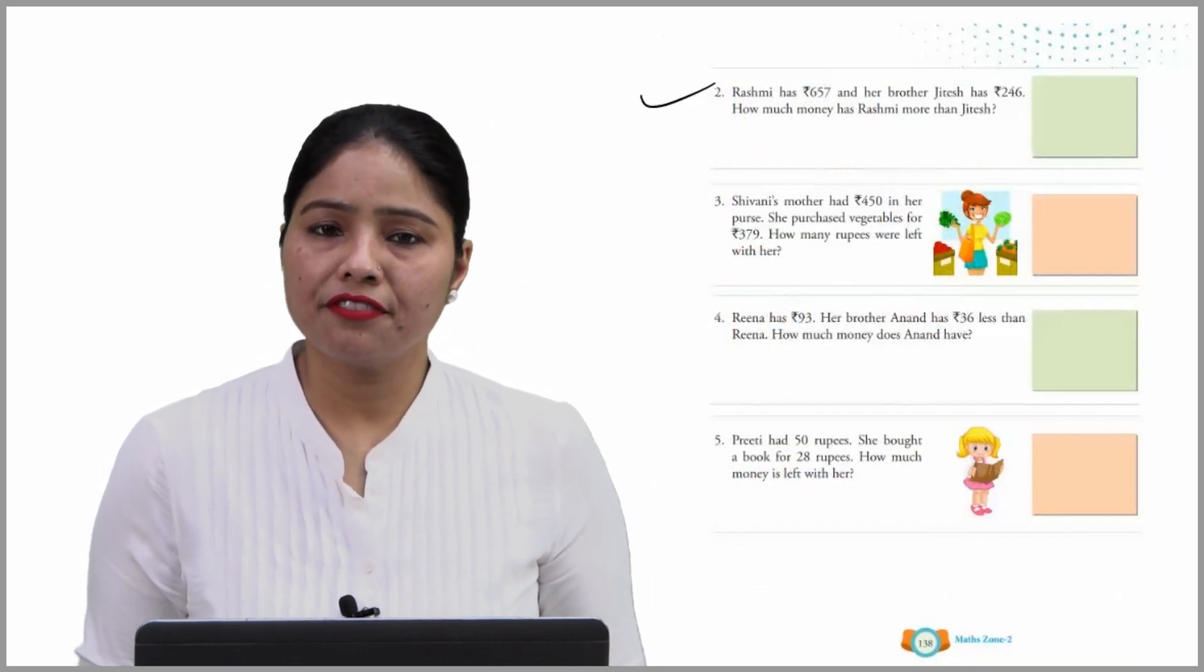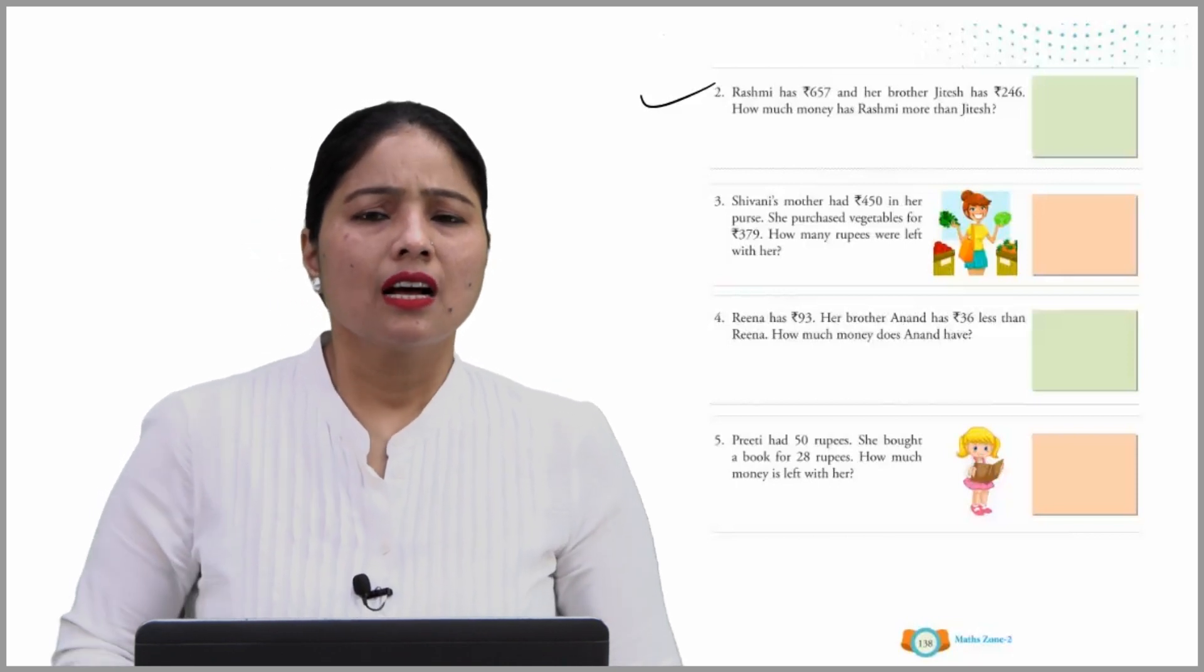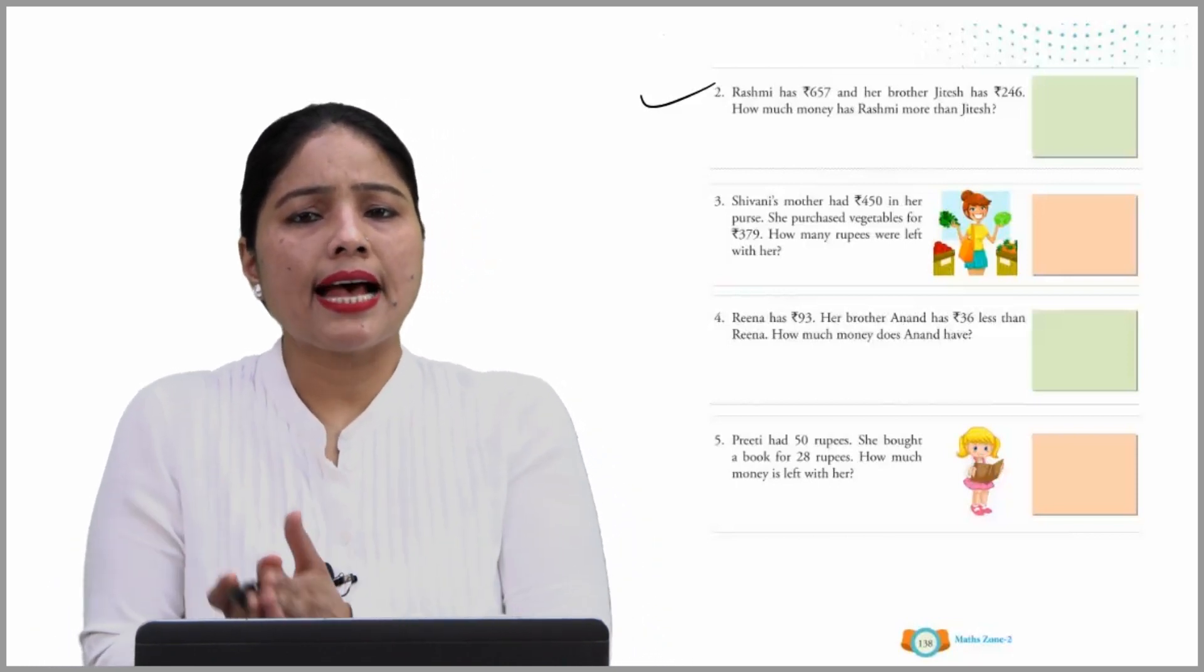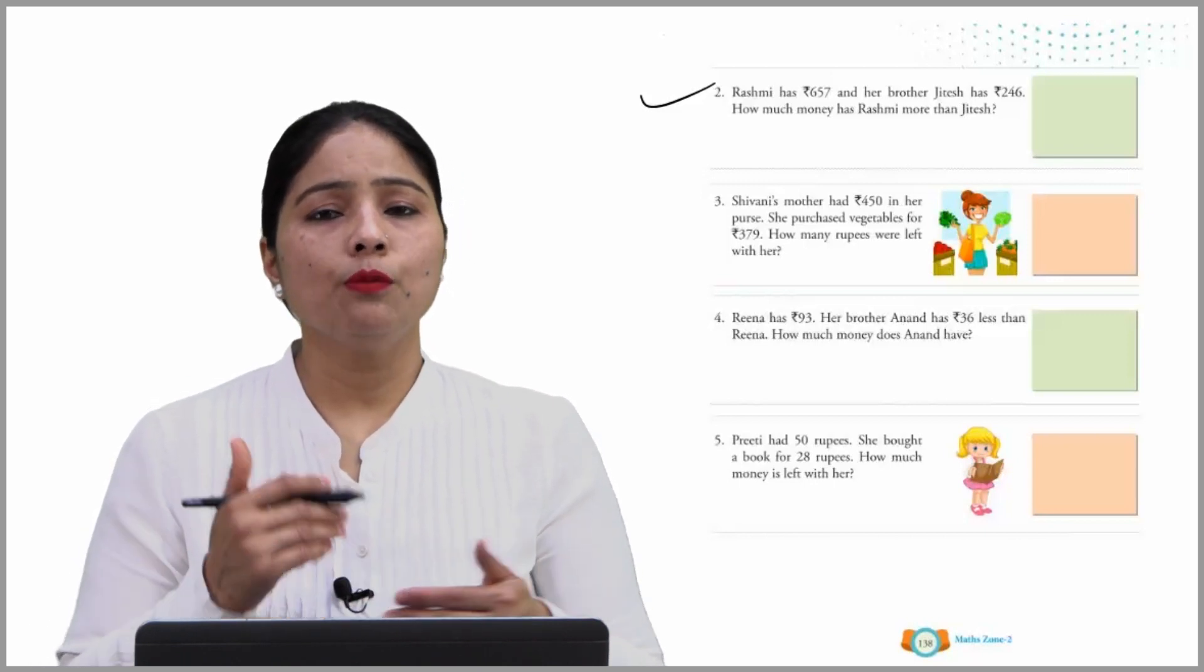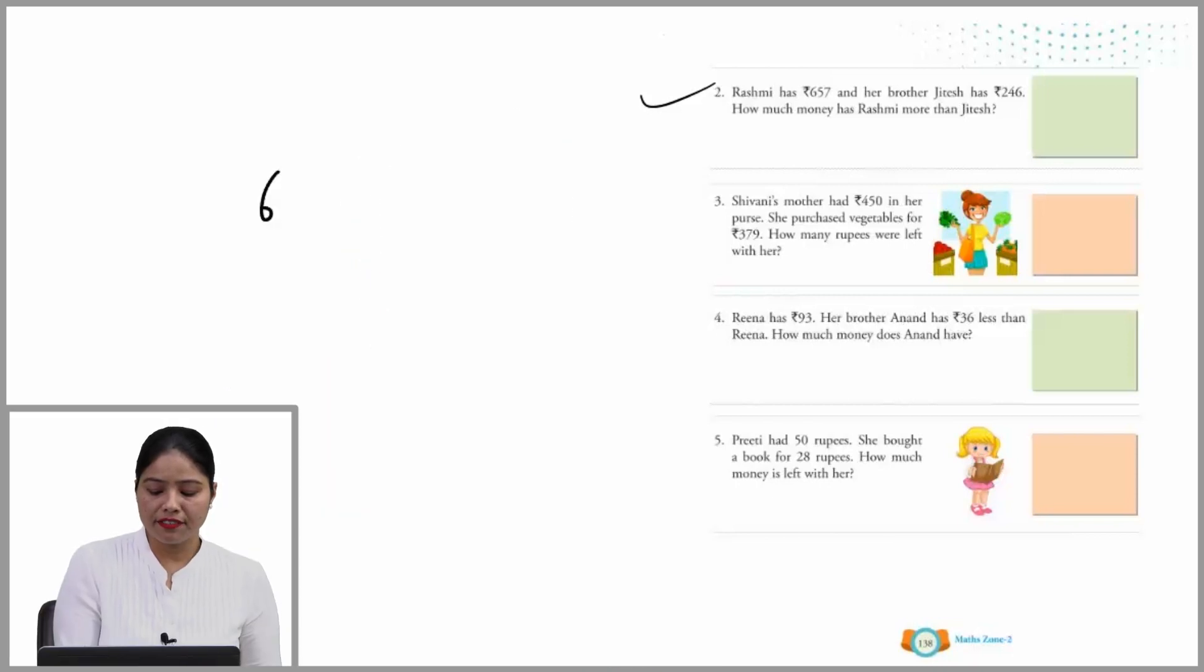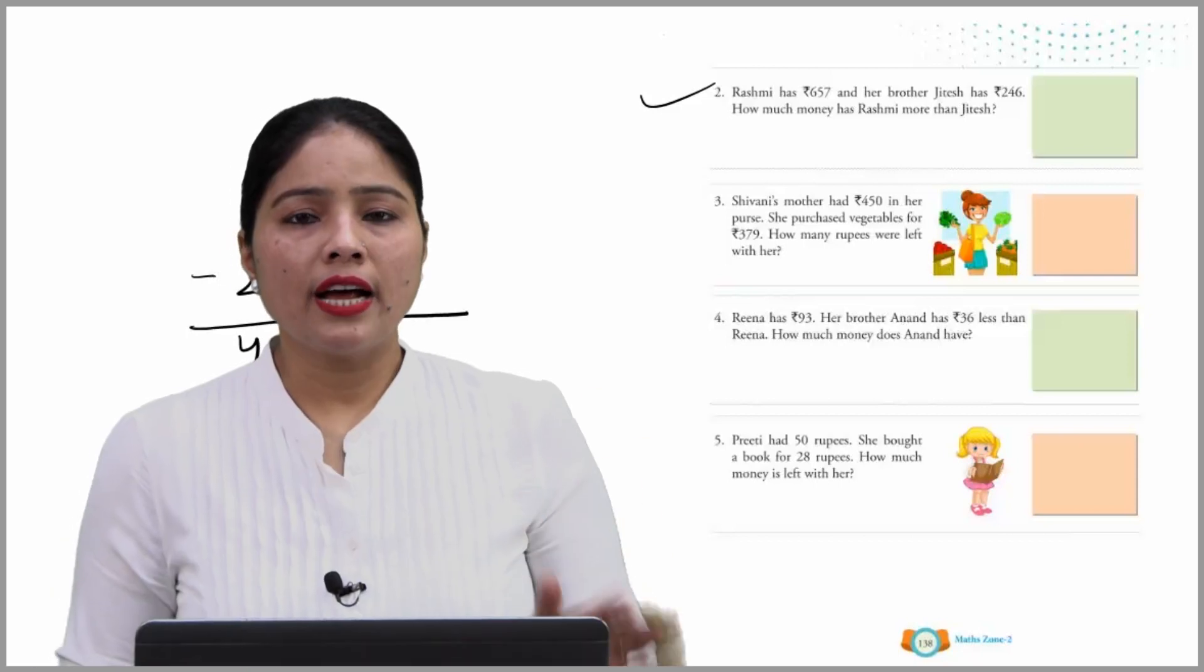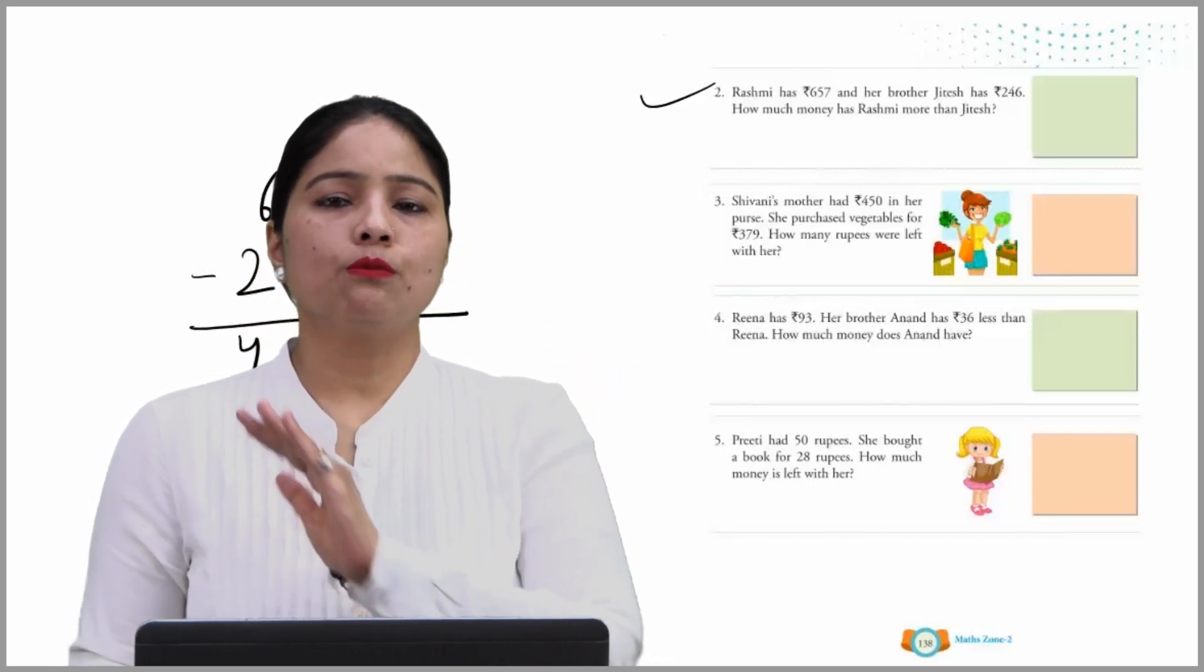Next one: Rashmi has 657 rupees and her brother Jitesh has 246 rupees. How much money has Rashmi more than Jitesh? For that, we have to subtract both numbers. First is 657, write it over here. Then subtract 246 from that. 7 minus 6 is 1, 5 minus 4 is 1, and 6 minus 2 is 4. So we can say that Rashmi has 411 rupees more than Jitesh. This is very simple.